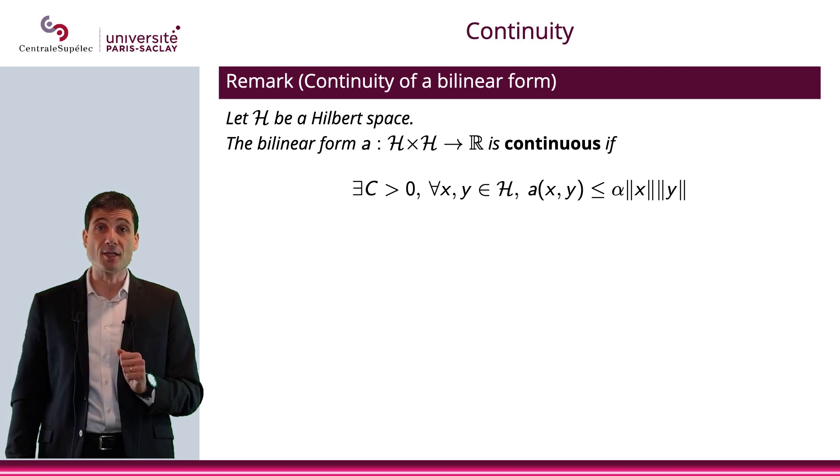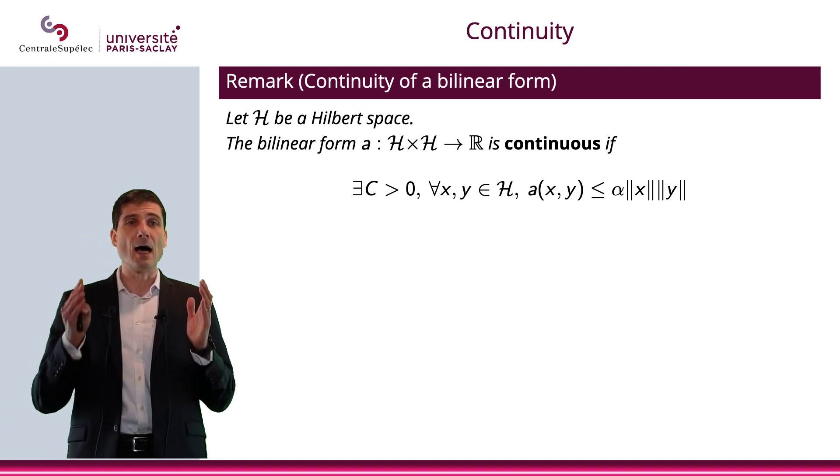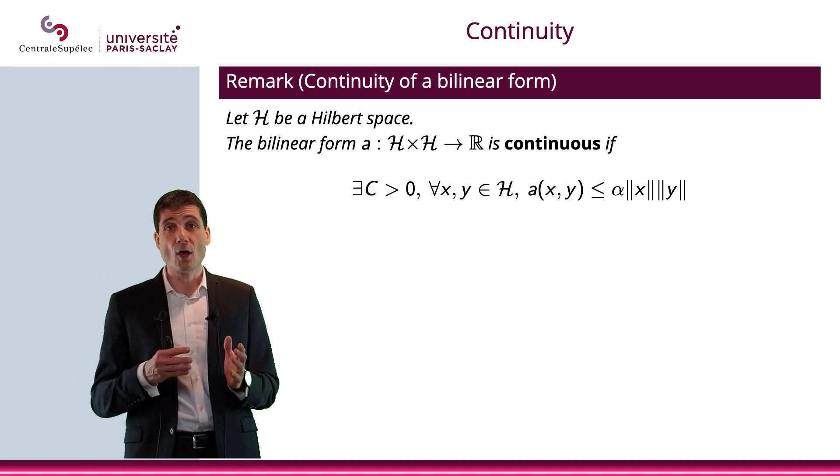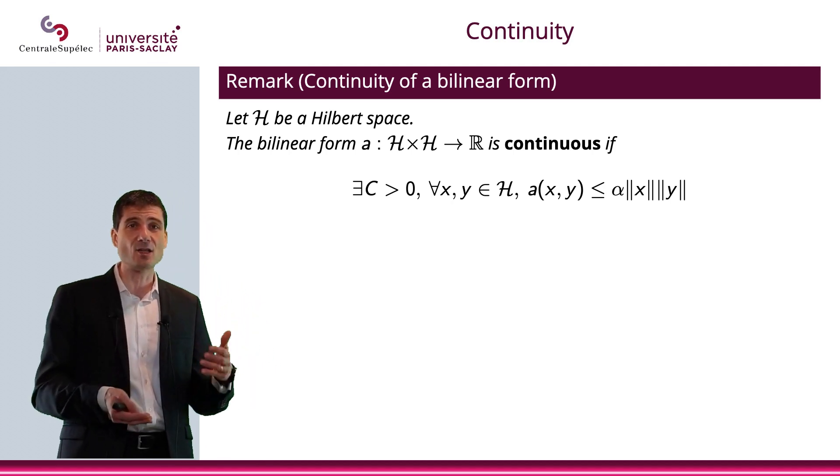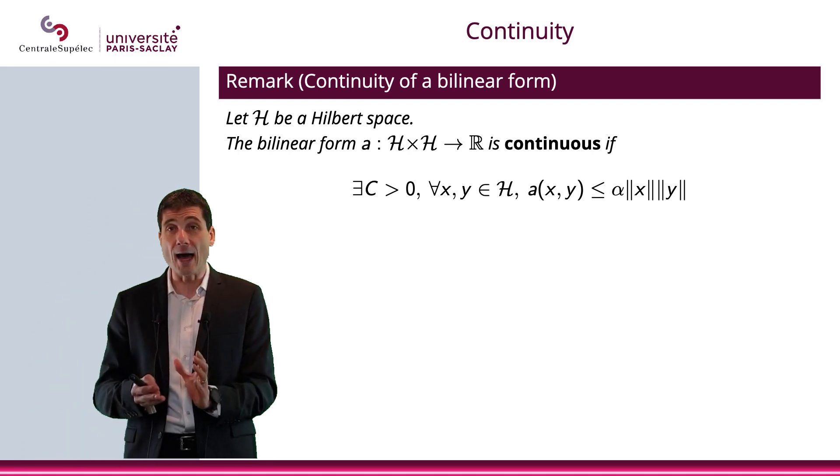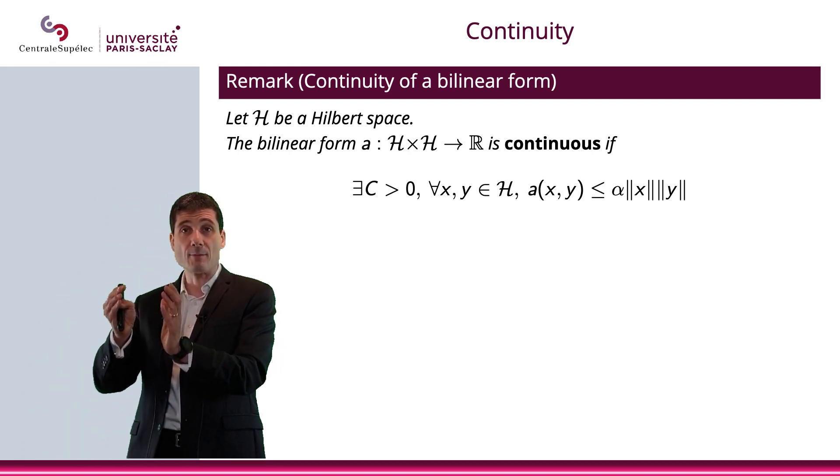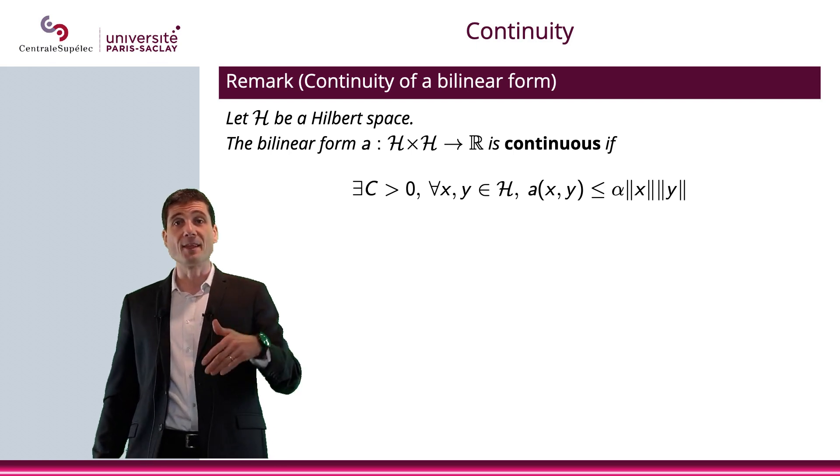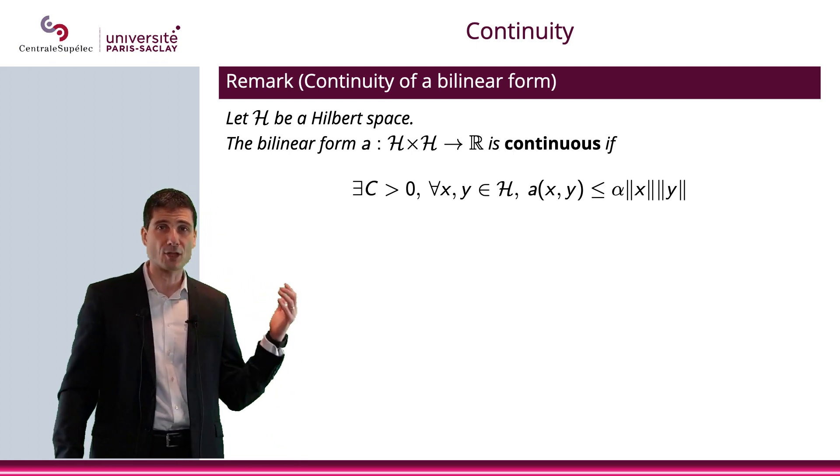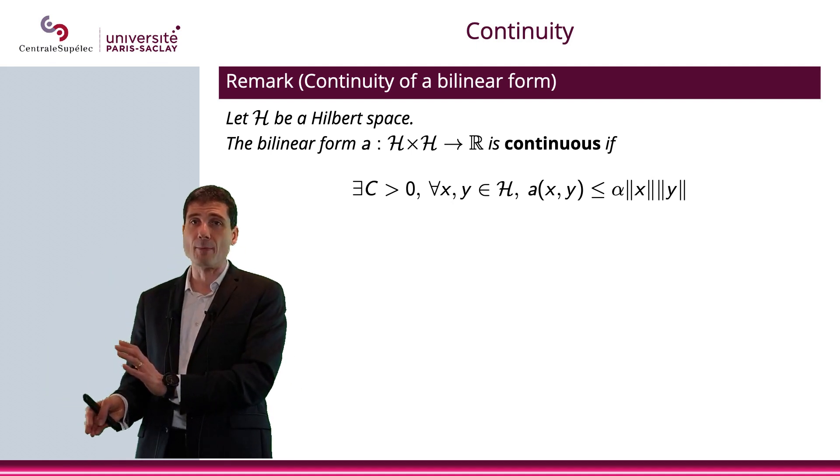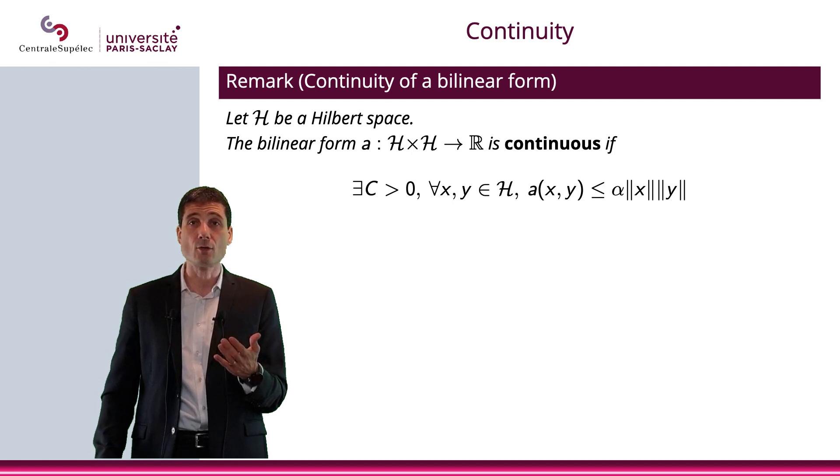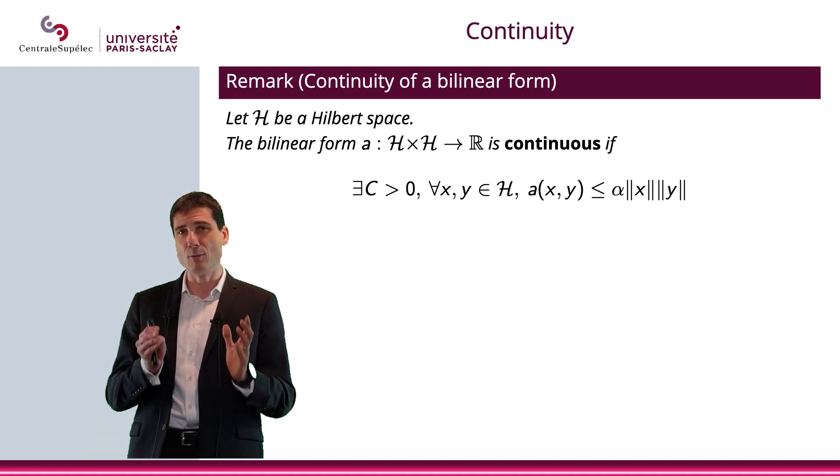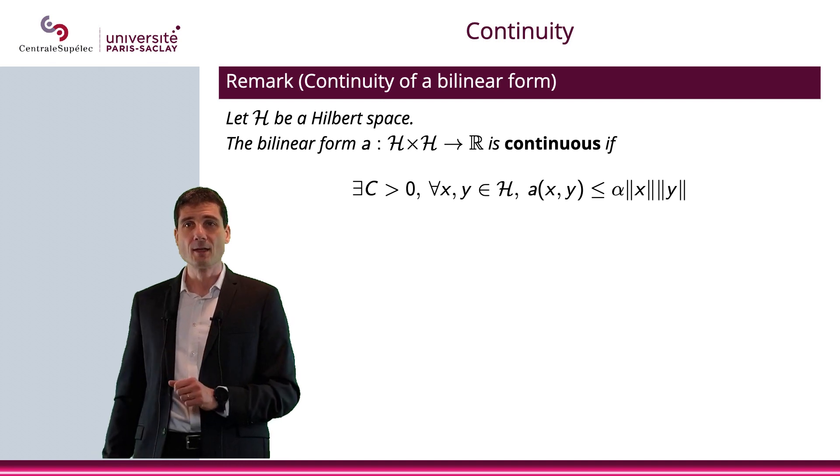That was coercivity. Let's move on to continuity, which is something you already know. Let H be a Hilbert space. You know what continuity is, but I just would like to emphasize how you can write it if you have a bilinear form. The way you can write it is this way: A(x,y) ≤ C times the norm of x times the norm of y. Of course, this norm, again, is the norm that derives from the inner product of your Hilbert space. You change the Hilbert space, you change the continuity property. So, possibly you can be continuous with one Hilbert space, but not with another one.